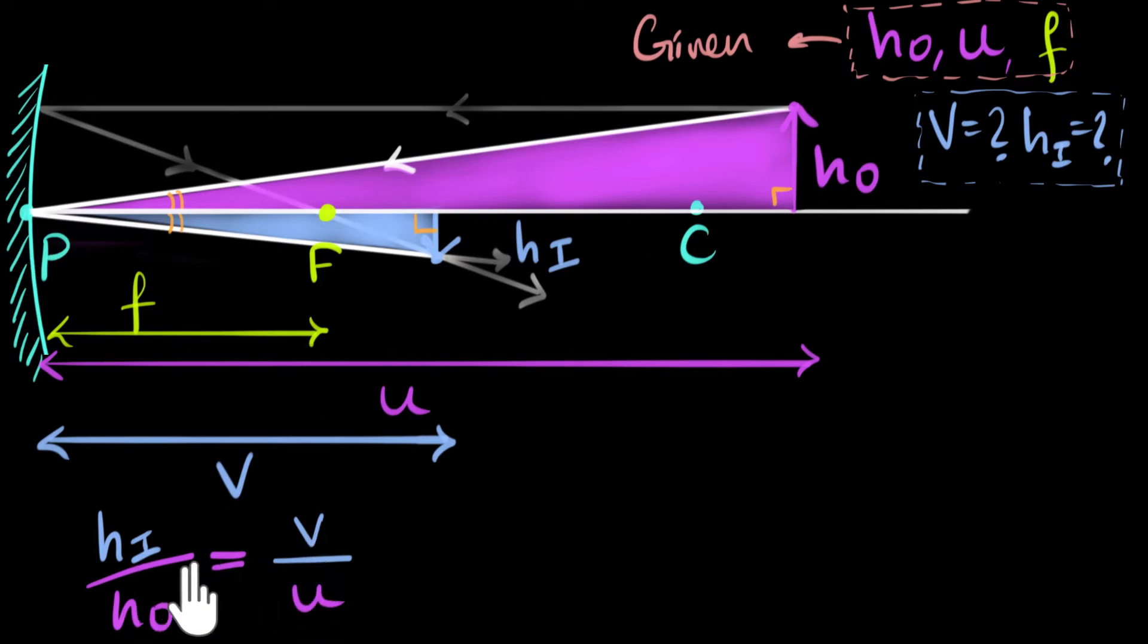And so notice what we have done. We have found a connection between the quantities that we want, but we're not done yet. Because notice that HI and V are both unknowns, and we have one equation with two unknowns, we can't solve it. So we could say, well, this is one equation for us. If we can get another equation in HI and V, then we are done.